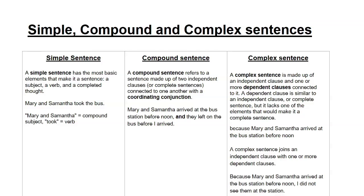A compound sentence is made up of two independent clauses connected with a coordinating conjunction. For example: 'Mary and Samantha arrived at the bus station before noon, and they left on the bus before I arrived.' Those could be two separate sentences, but by adding the coordinating conjunction you make it into a compound sentence.